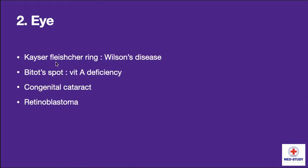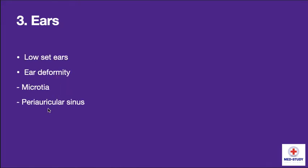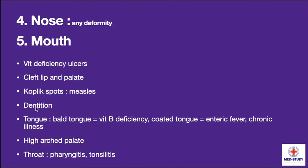Now coming to eyes. Kayser-Fleischer rings are seen in Wilson's disease. Bitot's spots are seen in vitamin A deficiency. Congenital cataract and retinoblastoma can also be seen. For ears, we have to know whether they are normal or low-set ears, and rule out any ear deformities such as microtia or periauricular sinus. Coming to nose, we have to rule out any deformity.